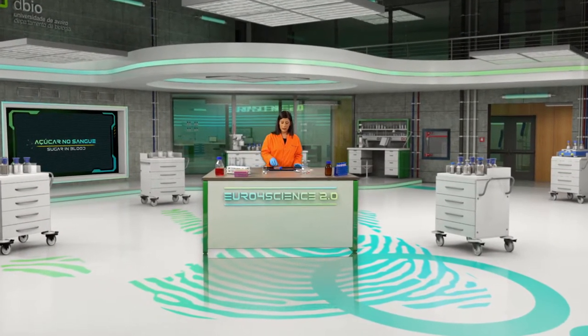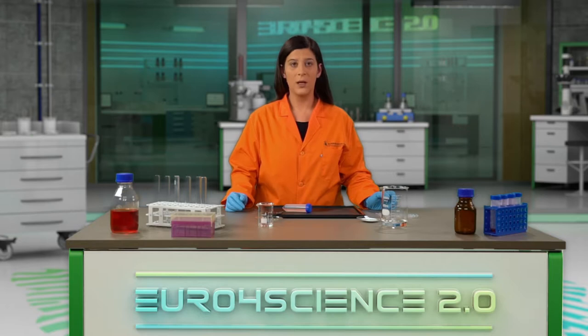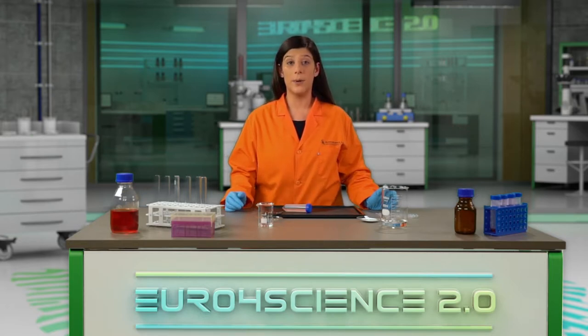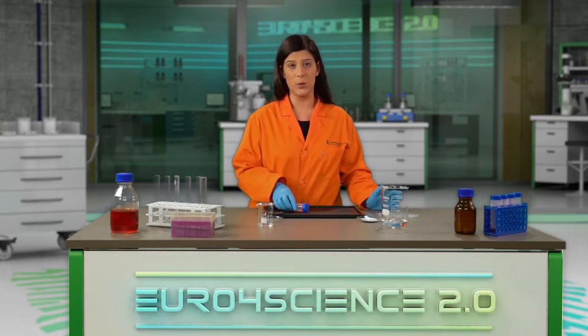Hoje temos aqui uma amostra de um líquido que foi encontrada no local do crime. Pensámos que será uma solução açucarada. Sabemos que a vítima sofria de diabetes e por isso é extremamente importante perceber se a quantidade de açúcar presente nesta amostra contribuiu para a sua morte. Necessitamos então de uma escala de cor com concentrações conhecidas para que as possamos comparar com a amostra recolhida.